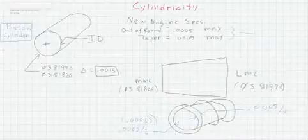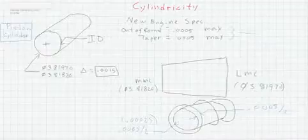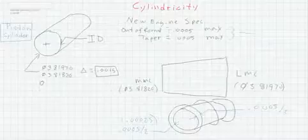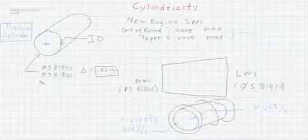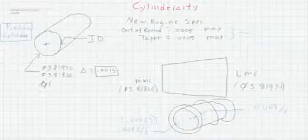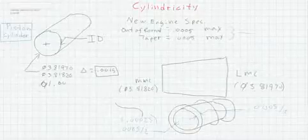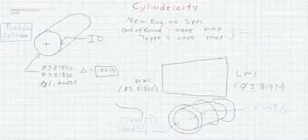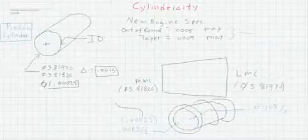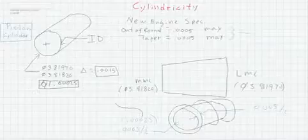Somewhere underneath our limits of size specification we could apply a feature control frame and we're not drawing as good as we could. So we'll have a cylindricity equal to that 0.00025 that would give us a maximum taper and out of round condition of 0.0005. So that's one way of doing it.